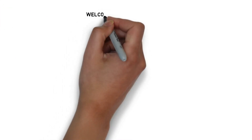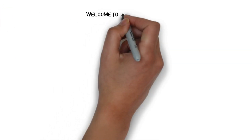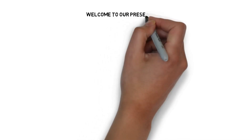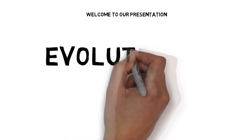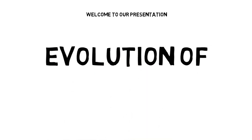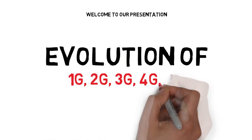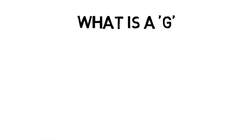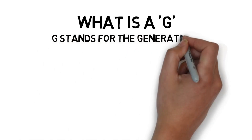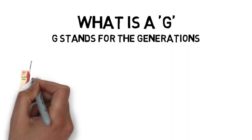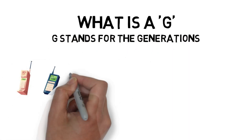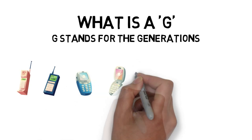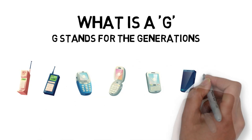Welcome to our presentation. Today we will talk about the evolution of the 1G, 2G, 3G, 4G, and the latest 5G. G stands for generations. We can see that mobile phones are getting much better and bigger throughout the years.